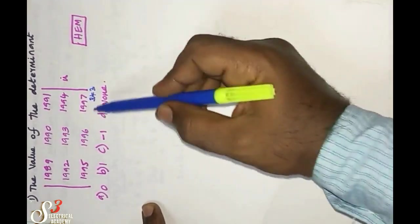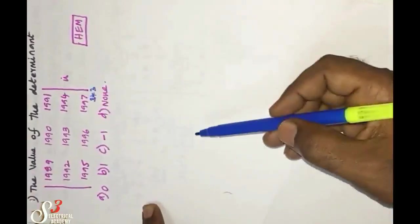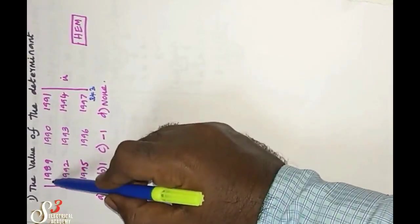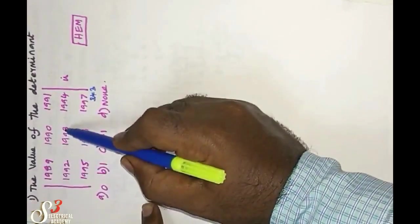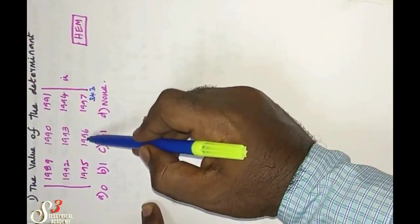This is a higher engineering mathematics objective type question on linear algebra. A three by three square matrix is given, and we have to find the determinant. By multiplying using the conventional method, we have to compute 1989 times 1993 times 1997 minus 1996 times 1994.